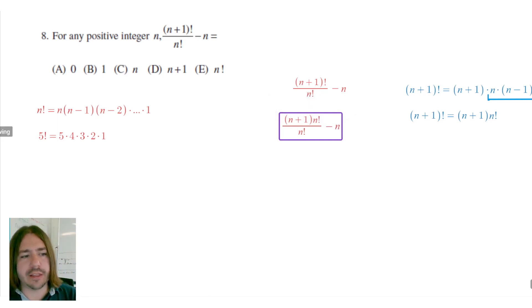Now, once I rewrite it like this, I can then simplify n! over n! reduces to one. And so I'm just left with n+1 minus n, and n minus n is zero. So this just equals one. And that's going to be our answer.